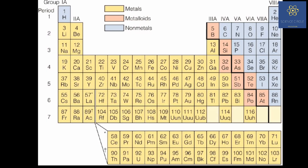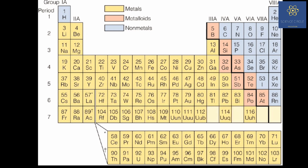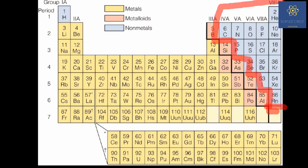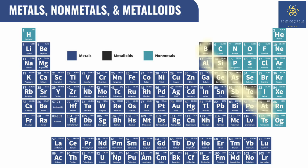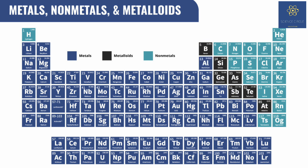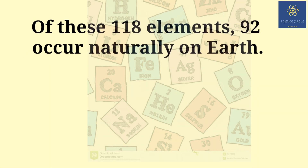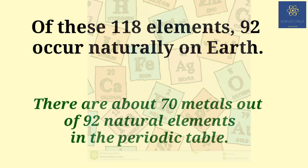Metals are separated from non-metals on the periodic table through a zigzag line starting from carbon till radon. The elements between the two are phosphorus, astatine, and iodine. Here is a periodic table with color demarcation to show which are metals, non-metals, and metalloids or semi-metals. Elements to the right of the line are non-metals, and elements just to the left are termed metalloids. There are almost 70 metals out of 92 naturally occurring elements in the periodic table.